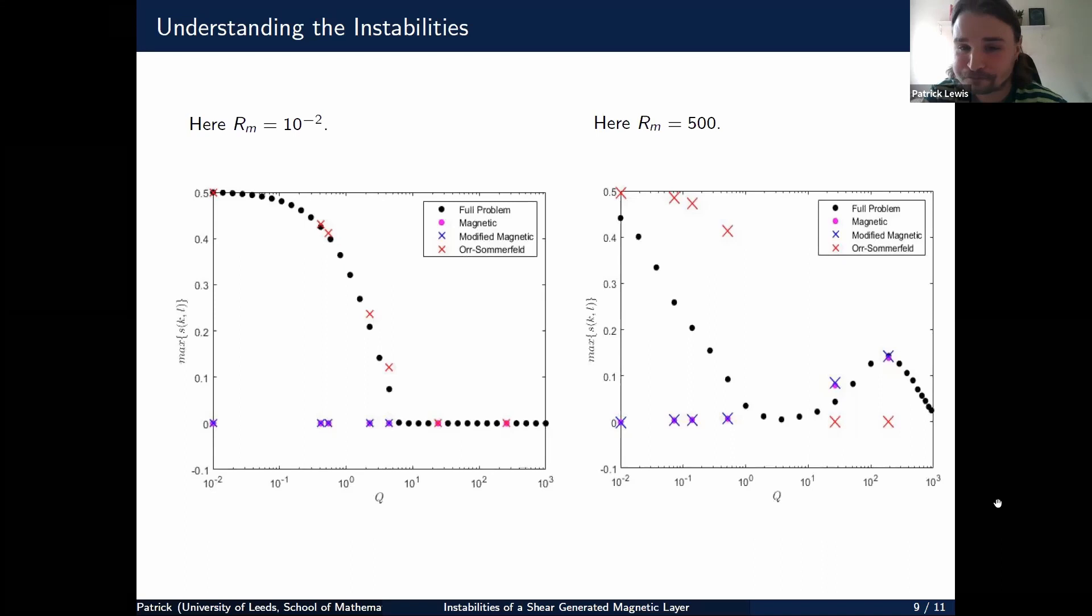If we take a larger magnetic Reynolds number, we see that the Orr-Sommerfeld and the full problem are quite different. There's greater influence from the magnetic field on the flow. We have that parameter, the ratio of magnetic energy to kinetic energy, QRm/Re. At best when Q is one hundredth, that ratio is still a tenth, so you expect some influence of the magnetic field. That's why we see this stabilization effect from the Orr-Sommerfeld to the full problem. More interestingly, as we increase Q more, we see another type of instability emerge which is purely described by the magnetic system. When Q is around two hundred, the Orr-Sommerfeld flow is stable, but there is an instability in the full problem captured by both the magnetic and modified magnetic problems.